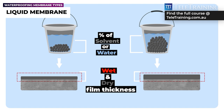For example, the membrane on the left with fewer solid particles will have a lower dry film thickness compared to the membrane on the right side, which has a higher content of solid particles, assuming the wet film thickness is the same for both of them.